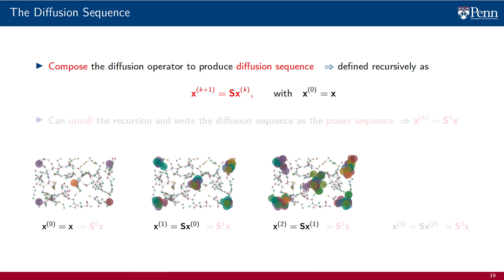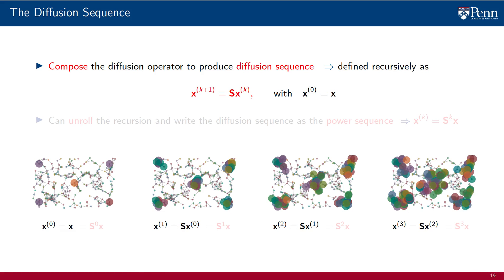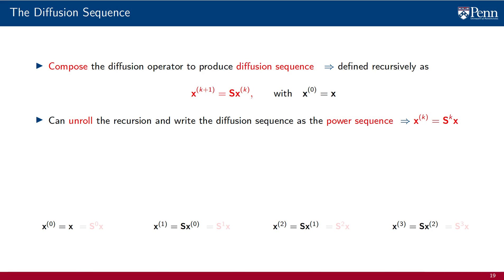Element 2 of the diffusion sequence is the diffusion of element 1 — the diffusion of the diffused signal. Element 3 is the diffusion of element 2 — the diffusion of the diffusion of the diffusion. Alternatively, we can unroll the recursion and simply write the kth entry of the diffusion sequence as the kth power of the graph shift operator S applied to the input graph signal X.